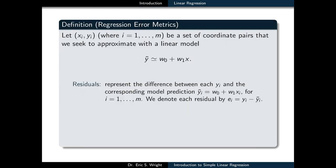In order to validate our model, we need to define one or more error metrics. And all an error metric is is a tool for measuring the amount of disagreement between what the model actually predicts and some ground truth, what's actually real. So we're going to let X sub i and Y sub i be a set of m coordinate pairs, our data set that we seek to approximate with a linear model: Y tilde equals W0 plus W1 times X.